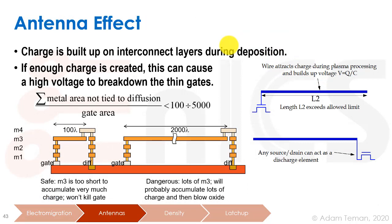The next manufacturing effect is the antenna effect. The problem is that charge builds up on interconnect layers during deposition — similar to static electricity when walking on a carpet with sneakers. If enough charge is created, it can cause a high-voltage breakdown that destroys thin gate oxides. Looking at two examples: we first make metal one, creating contacts and metal wires with a small amount of charge. Then metal two — again a small charge. Then metal three with somewhat more, but still not much because the wire is only about 100 lambda units long.